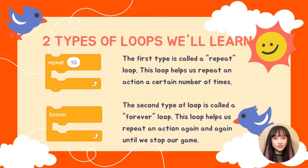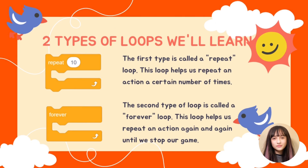The second type of loop is called a forever loop. This loop helps us repeat an action again and again until the game stops. For example, if we want a character to keep walking forwards, we can use a forever loop and tell it to keep walking until the game stops. By using these loops, we can make our games more interesting and exciting.